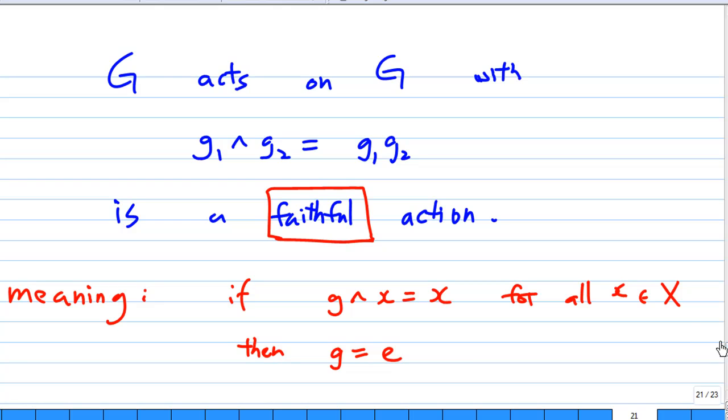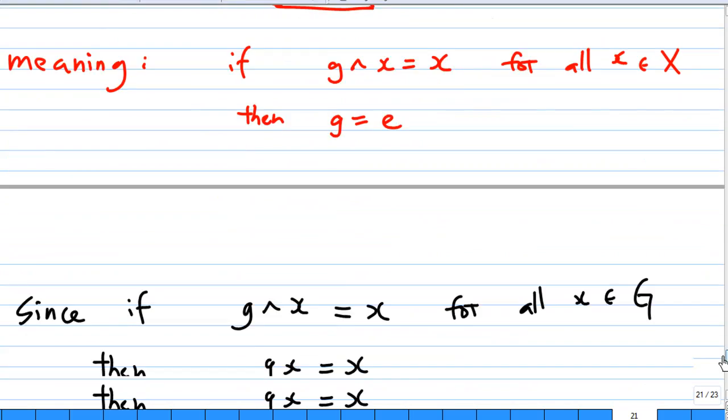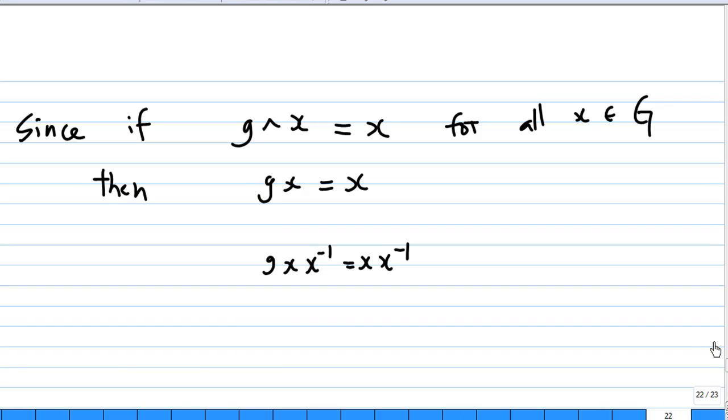Now, we're going to show that this is a faithful group action. What does it mean by faithful group action? It means that if g^x equals x for all x here, then g must be e. How do we show that? Now, for this particular action, if g^x equals x, on the left-hand side, g^x is gx. So, I have gx equals x. Now, multiply both sides by x inverse since x inverse is an element of G also.